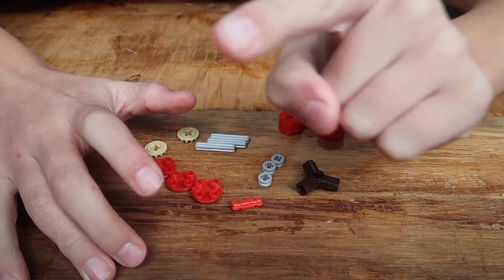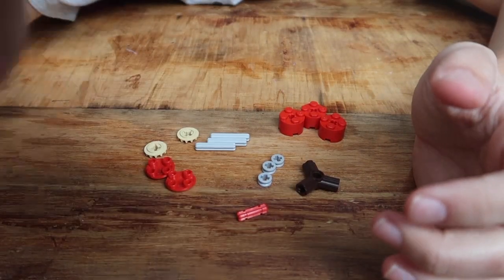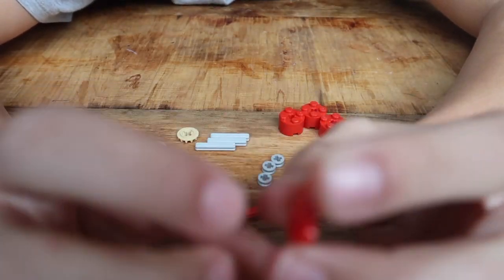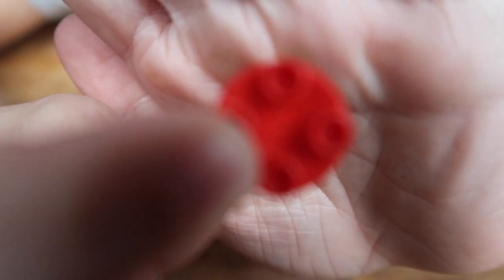To make this fidget spinner, here are all the LEGO pieces you're going to need. Like this piece right here, this piece is actually optional. You don't actually need it if it will actually focus.